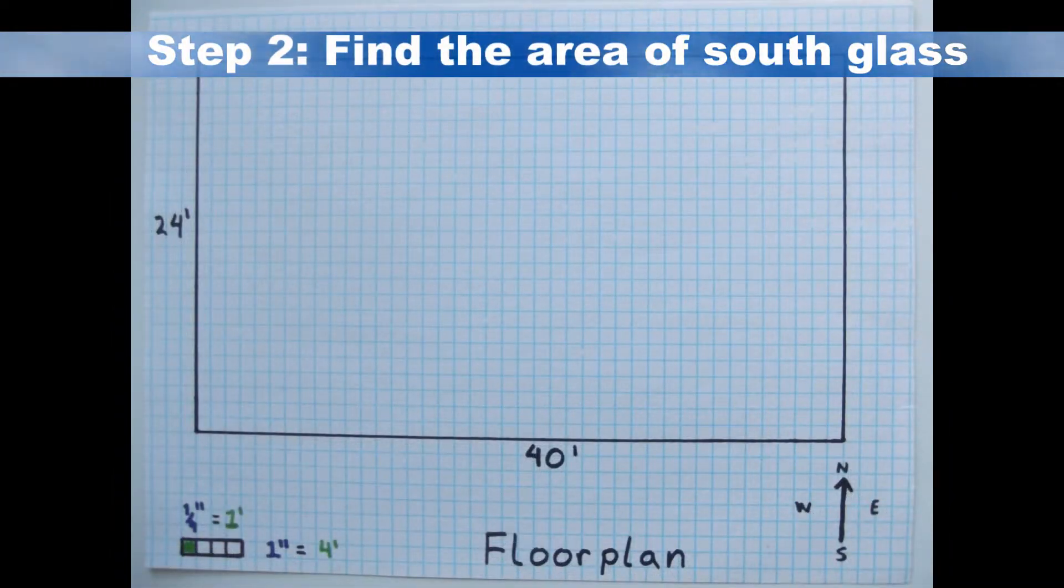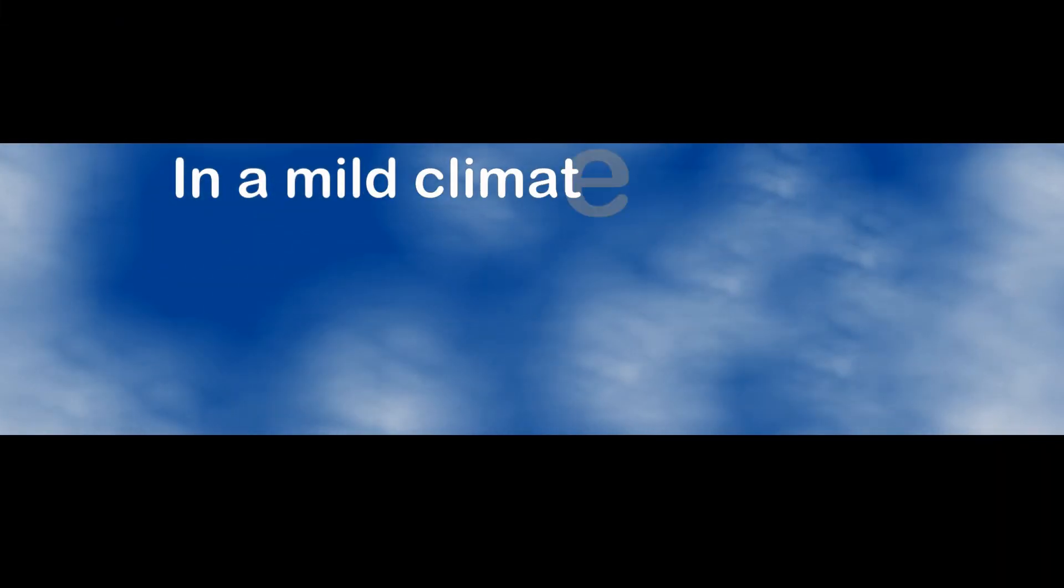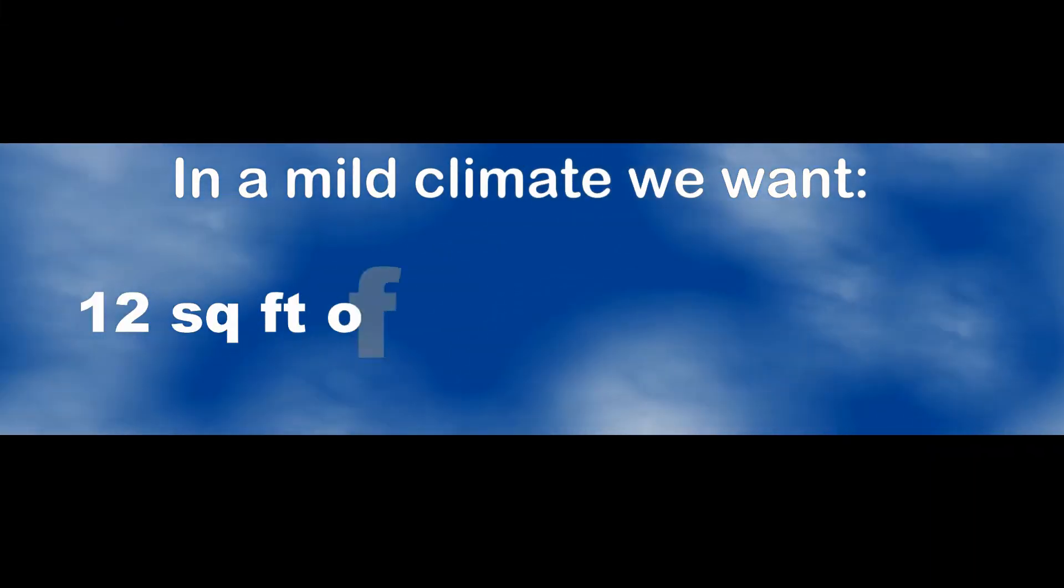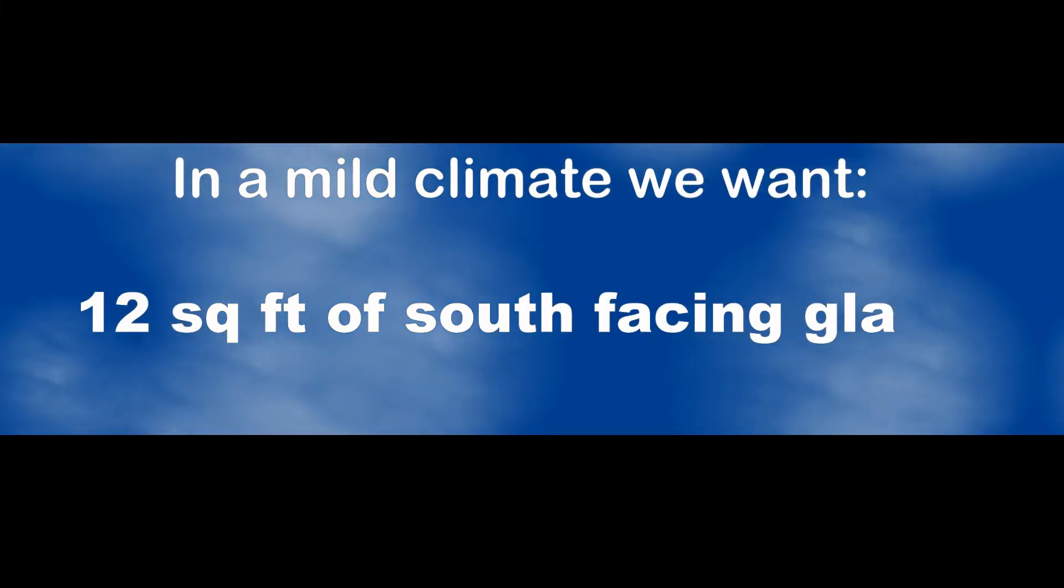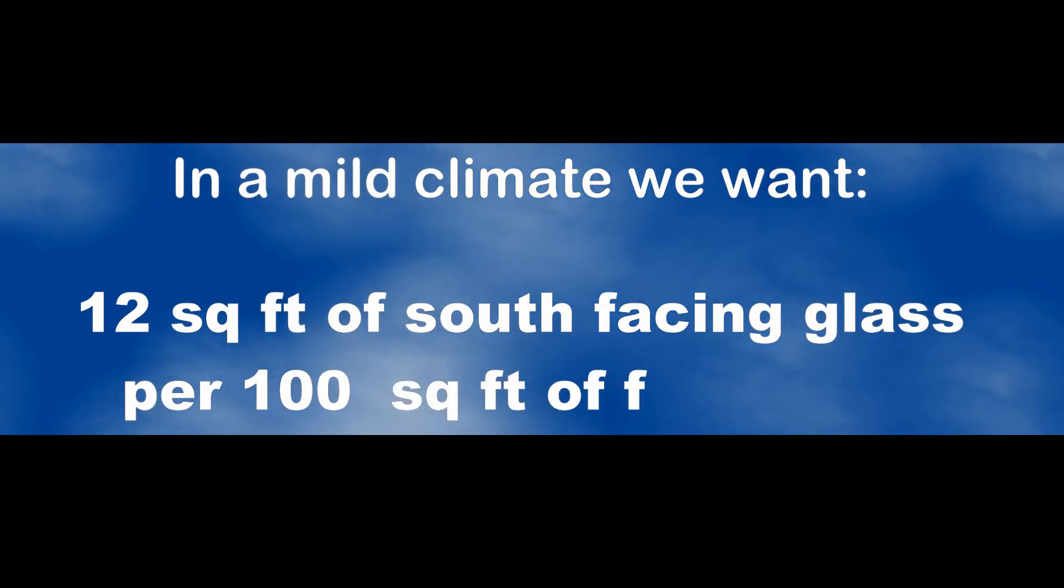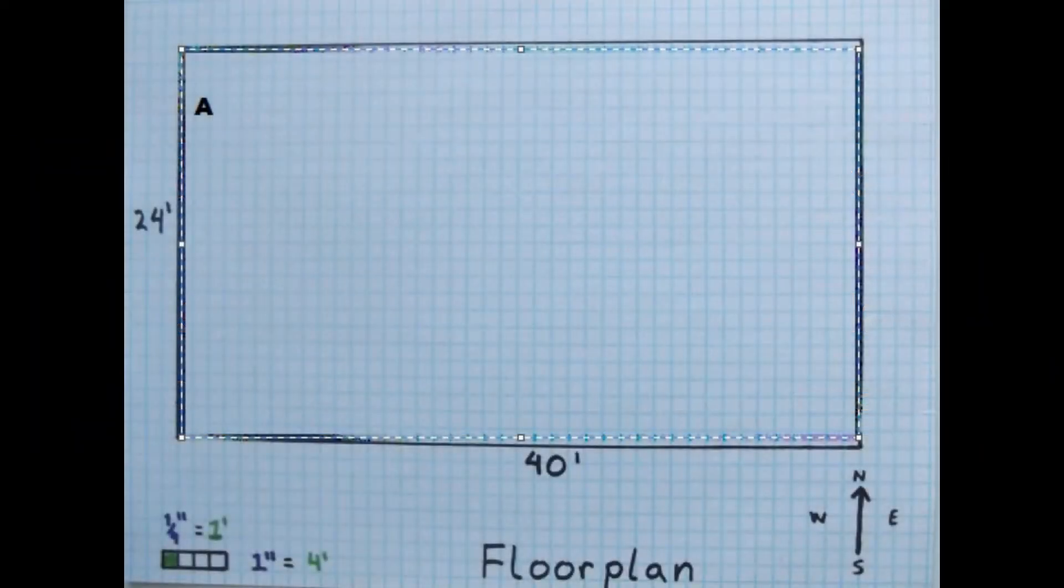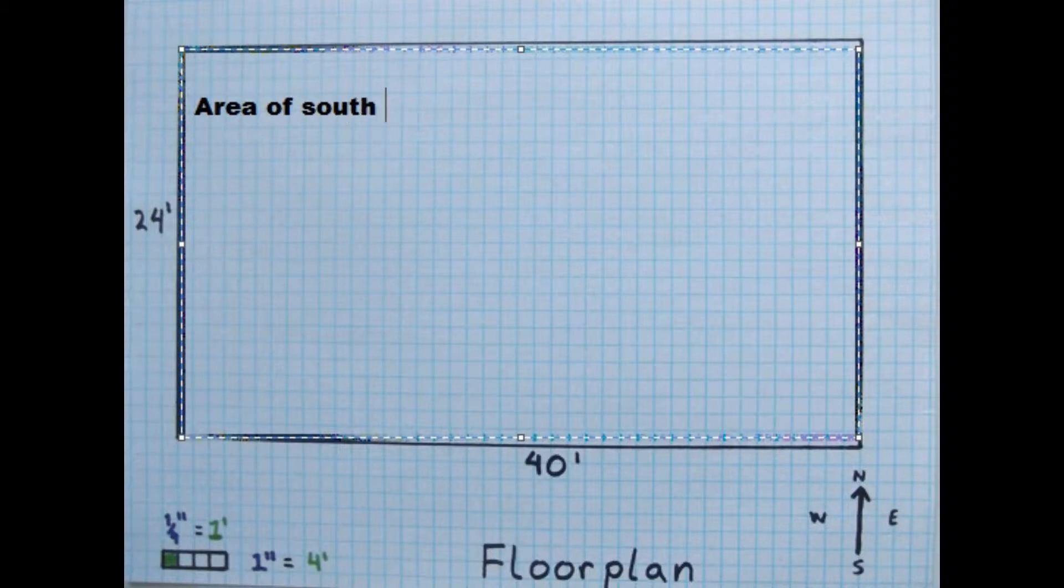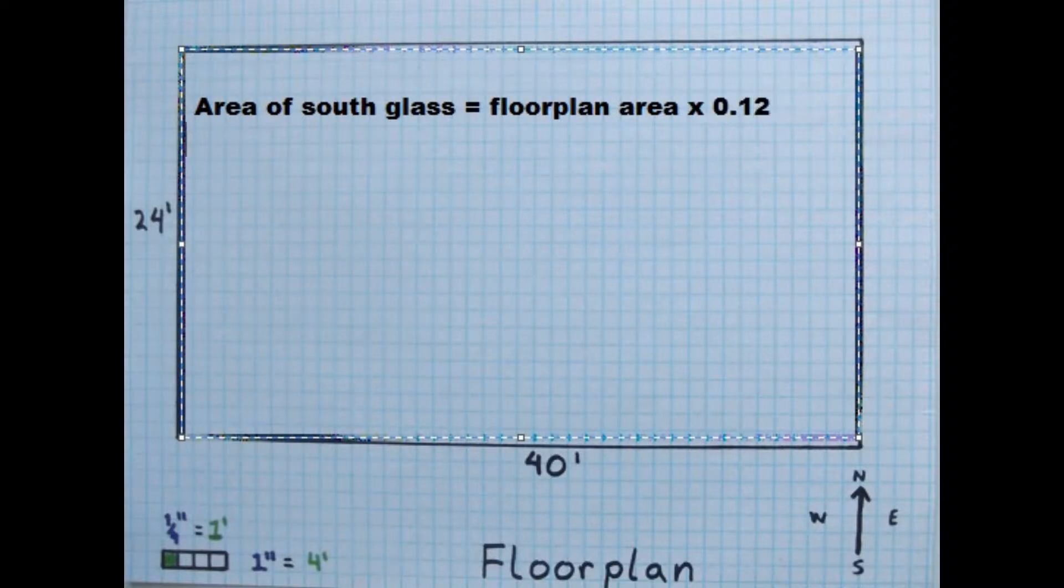Our next step is to find the area of south-facing glass. To estimate 12 square feet of glass for every 100 square feet of floor area, we will multiply the floor area by 0.12. For our house, we will multiply 960 square feet by 0.12, which gives us 115 square feet of south-facing glass.